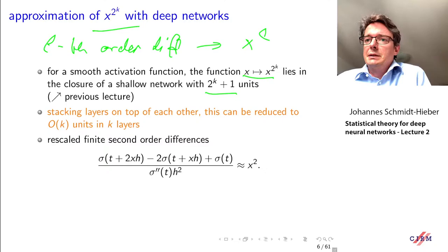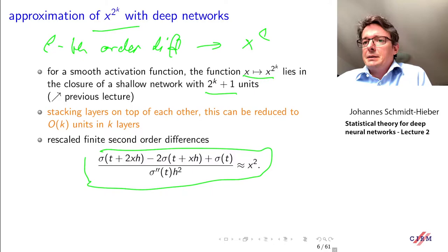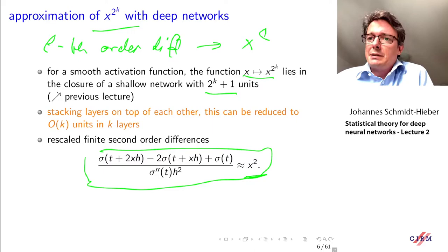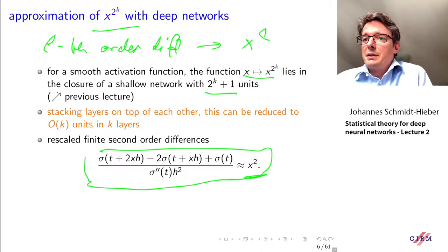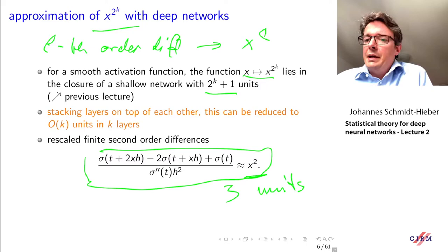The key idea: a shallow network with three units in the hidden layer can approximate x^2 using second-order differences. We then stack this same network k times, each time taking the previous output as input, computing x^2, x^4, up to x^(2^k). In layers where no activation function is applied, those hidden layers can be merged — since it's just matrix multiplication — condensing the network into a more compact form.